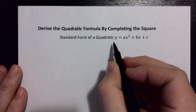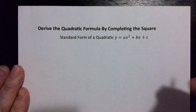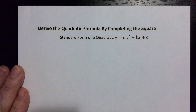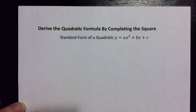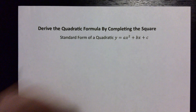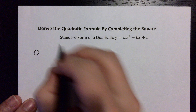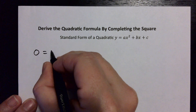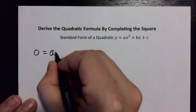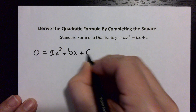So we've got y = ax² + bx + c. The quadratic formula is how we find zeros of a quadratic. So the first thing we're going to do is set the equation equal to zero — that's how we'll derive the quadratic formula. So: 0 = ax² + bx + c.